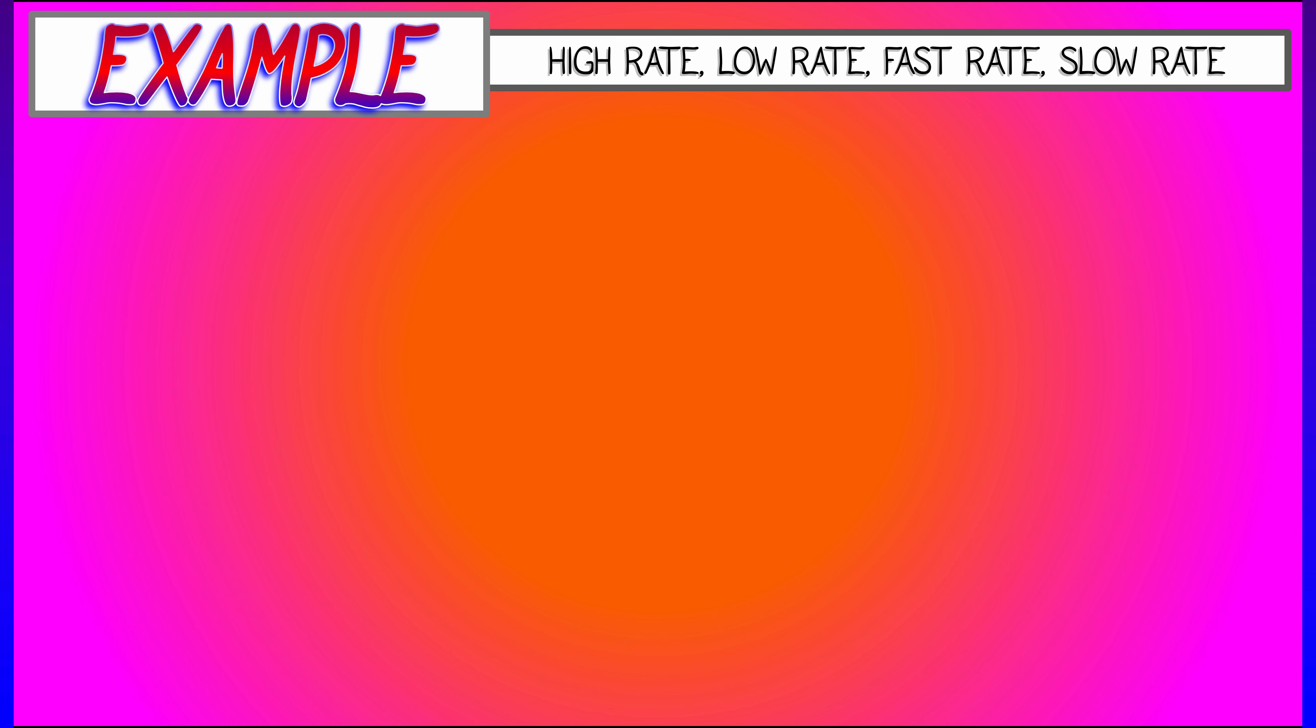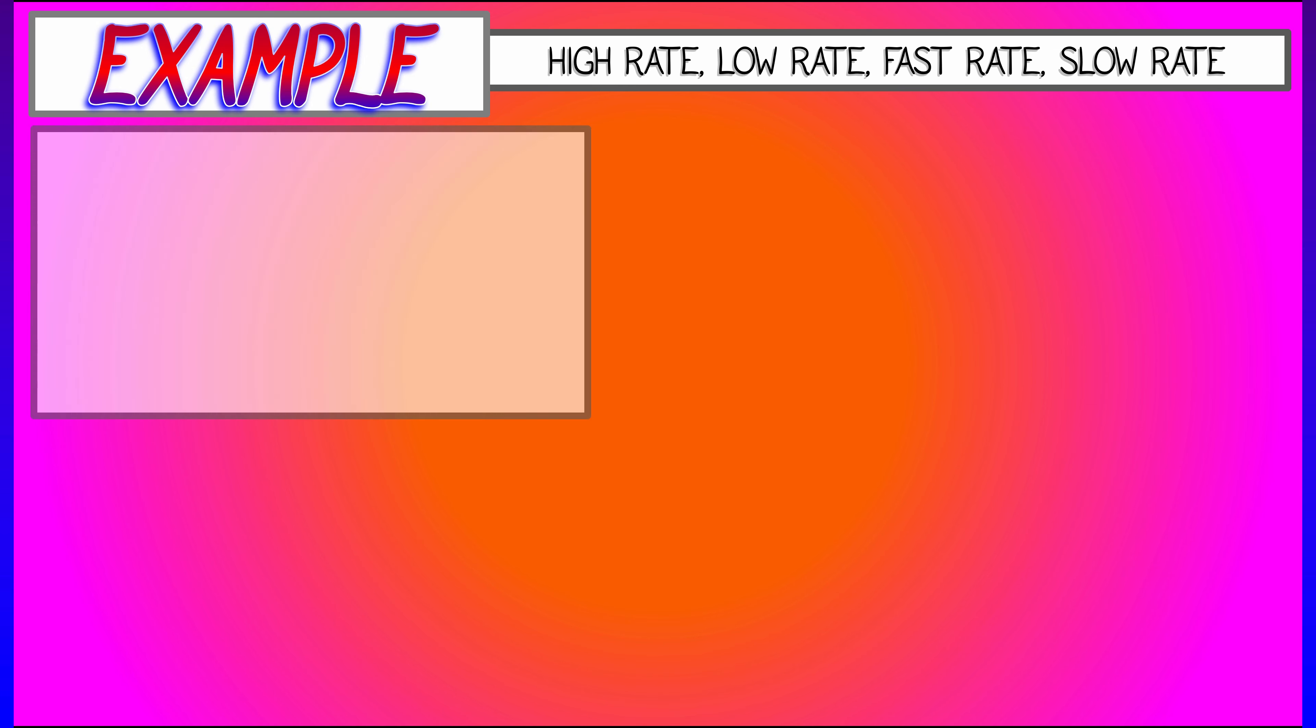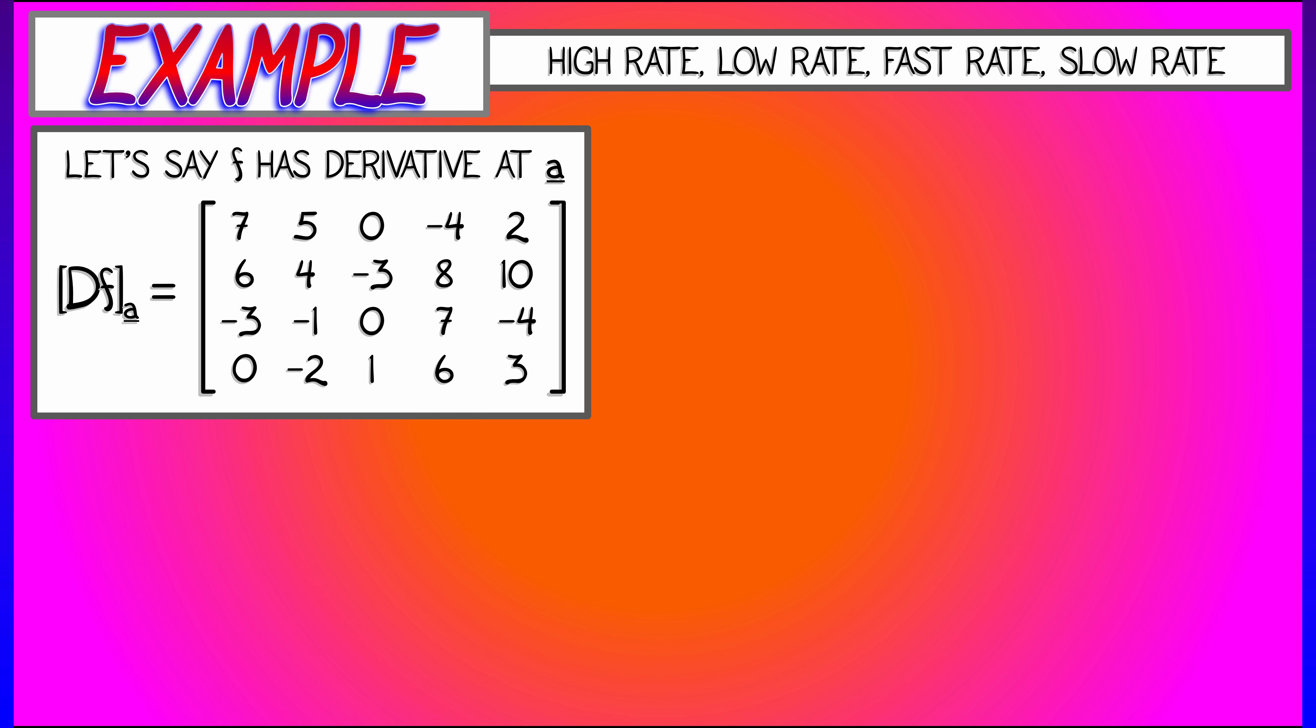Here's a kind of a weird example that involves rates of change. Let's say there's a function f, and at an input a, I'm not going to tell you anything about f except its derivative at this point. I'm going to give you some big numerical matrix, some entries positive, some entries negative, some entries zero, and now tell me what you can about f.